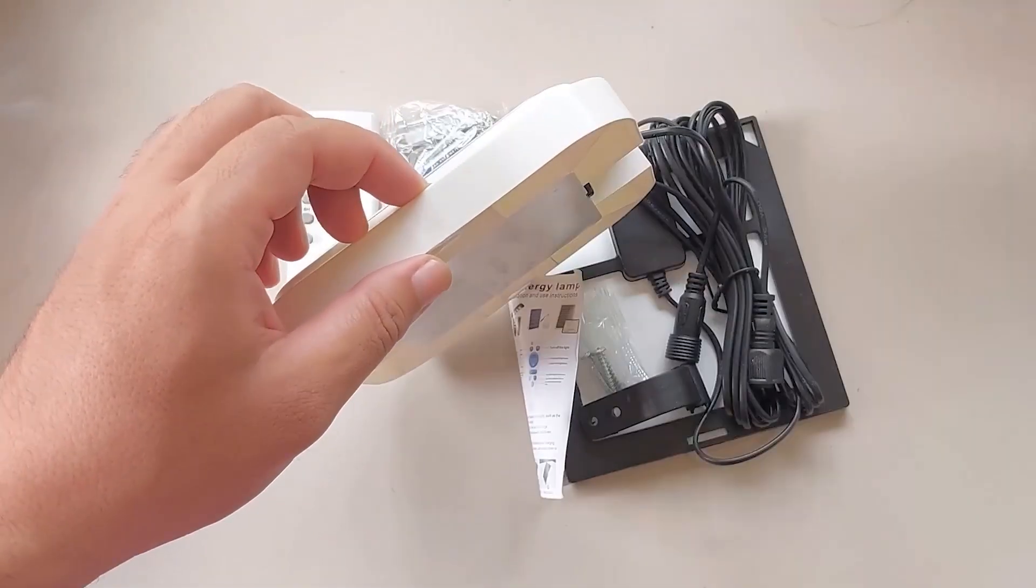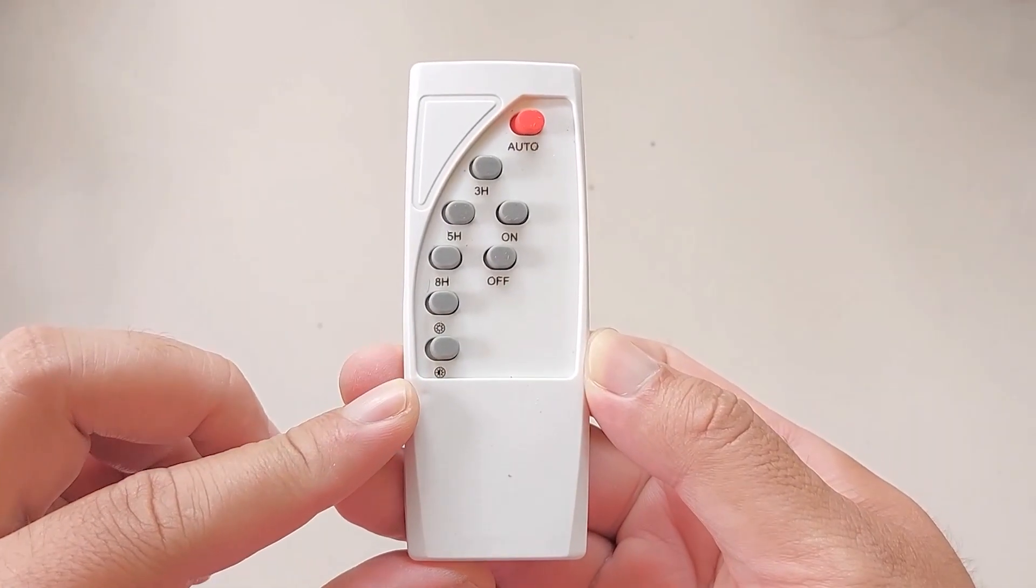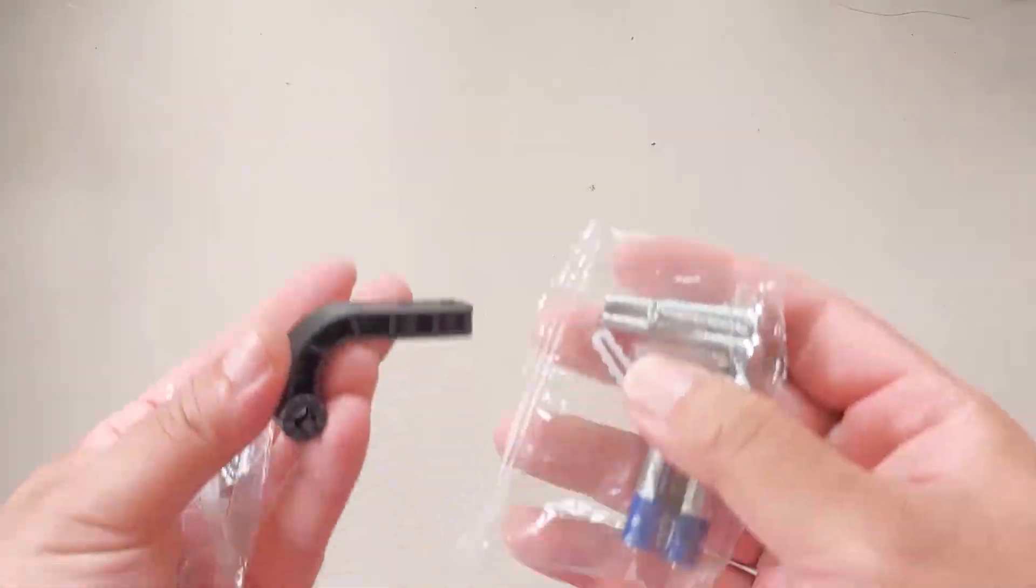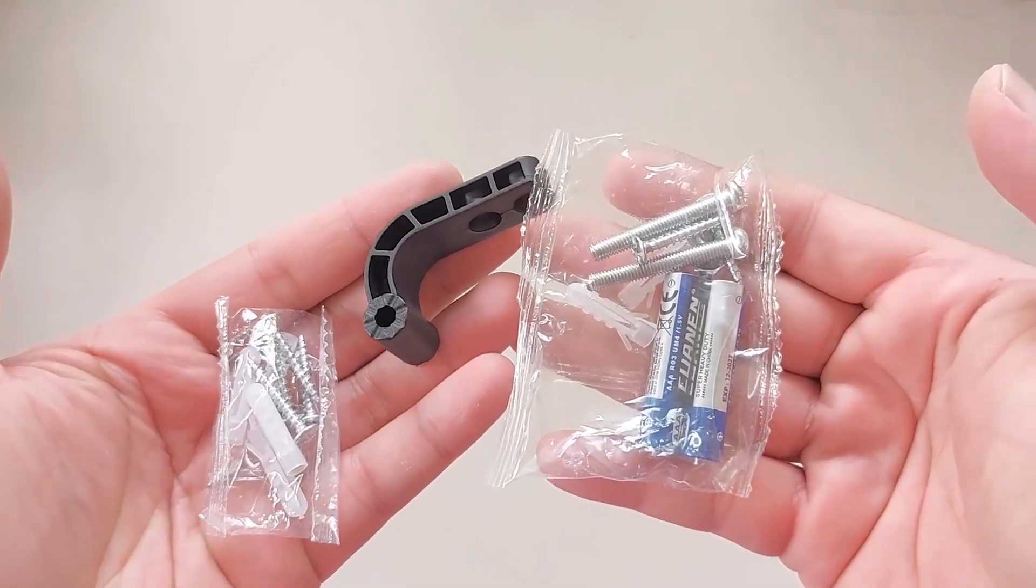First I'll quickly show you what comes with it. I got a remote which is nice, a user guide, a solar panel, batteries for the remote, screws and attachments and the solar light itself.